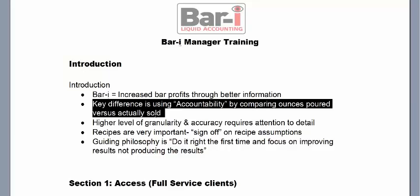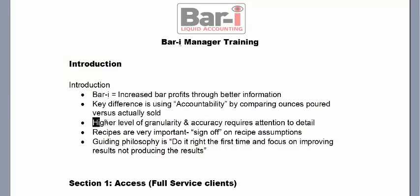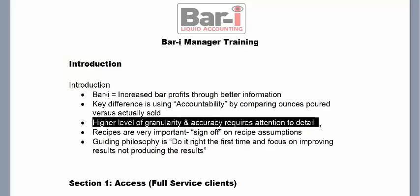That simply tells you: for every hundred servings of product, how many were actually sold? This higher level of granularity and accuracy requires an additional level of attention to detail. For instance, if you're using a clipboard system and forget to count the odd bottle, it probably won't show up. With our system, it will show those missing bottles. It's important to follow our training and systems to keep it accurate, so we can focus our attention where there are problems or opportunities to do better.